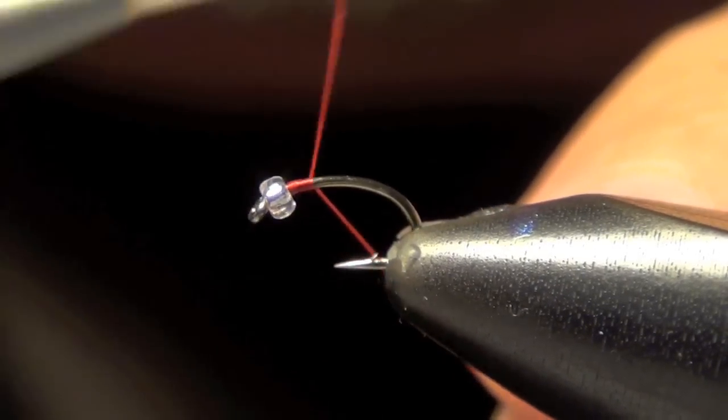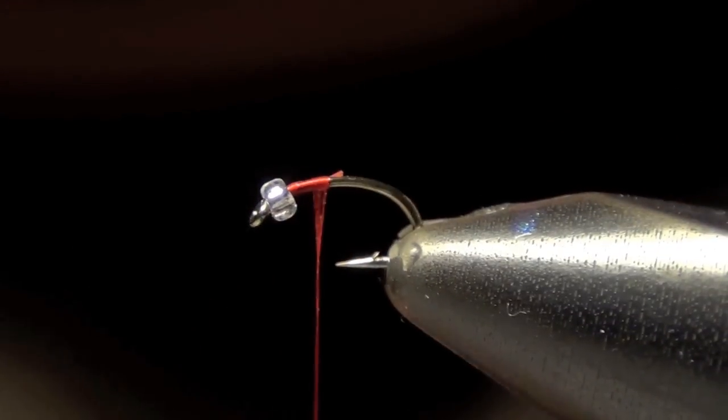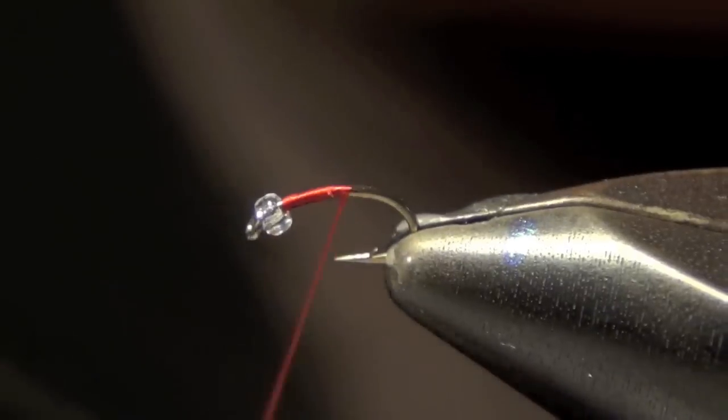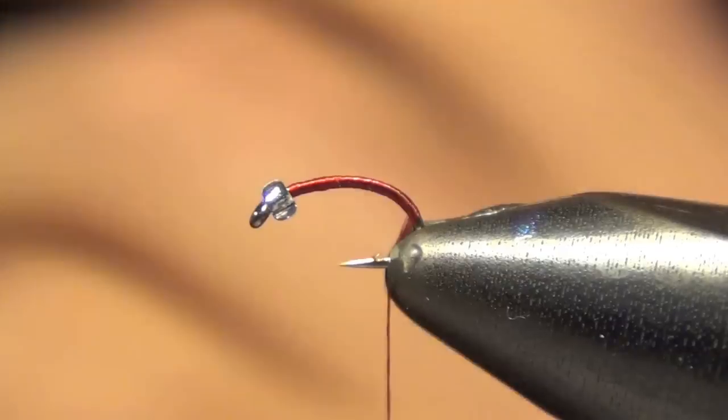Next thing I'm going to do is I'm going to take some red thread and I'm going to start it right behind the bead. Next, I'm going to take that thread and I'm going to go all the way down the bend about halfway.